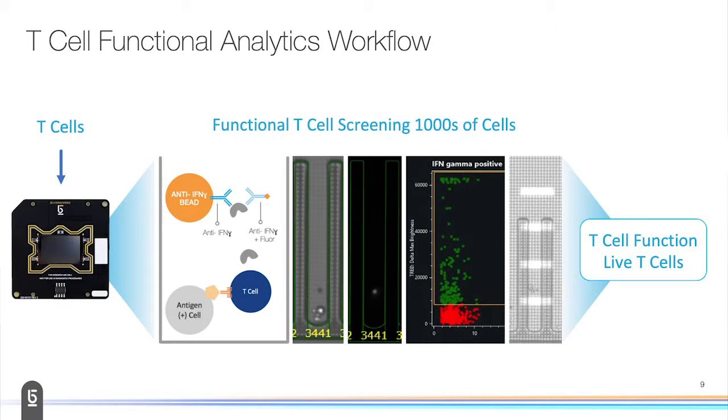What we're launching actually this summer is what we call a T-cell functional analytics workflow. Essentially, we're bringing in a batch of T cells, we're functionally screening them by combining them with an antigen presenting cell, watching what they do, and measuring actually the secretion of interferon gamma from a single cell in real time. This is just a quick snapshot, and I'll walk you through each of these through the talk.